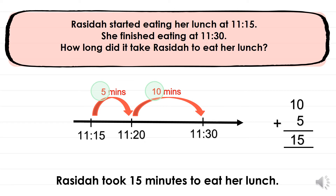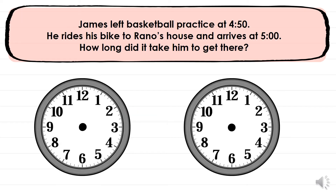That is one strategy for finding time taken. How would you do that on a clock? Using a clock, you know you have to skip by 5 because there are 5 minutes in between each of the numbers on the clock. James left basketball practice at 4:50. He rides his bike to Rano's house and arrives at 5 o'clock. How long did it take him to get there? We need to determine what the question is asking, then show the starting and ending times on the clocks. The start time is 4:50.